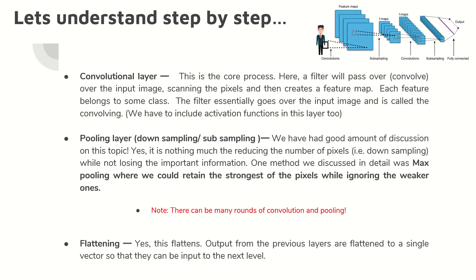The first layer is called the convolution layer. This is the core process where we will choose a filter. As we have done in the past, we have chosen 2x2 or 3x3 filters, which convolve over the input image — scanning the pixels, hovering over the input image — and extract the feature map. Each feature belongs to some class, and the filter essentially does the hovering work, and that's called convolving.